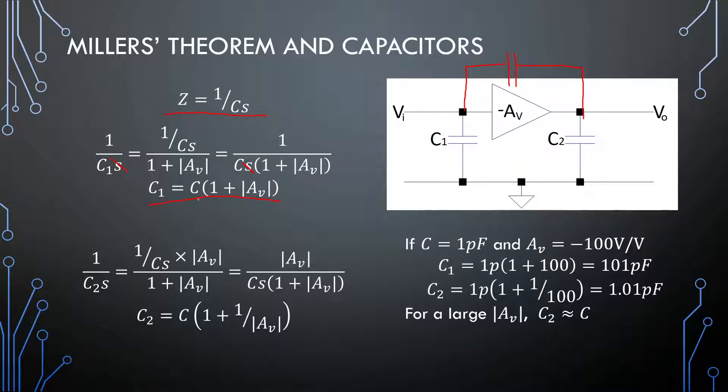So you will sometimes also hear that there's a Miller multiplication of a capacitor or whatever, and this has some interesting applications, especially for on-chip capacitors, because capacitors on chip can't be extremely large. If you need to apply a larger capacitor, you can make it bigger using this concept, or appear to be larger. And again with the output capacitor C2, we will see that it ends up to be 1 plus 1 over AV, and if this AV becomes extremely large, C2 will be approximately equal to C again.